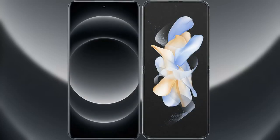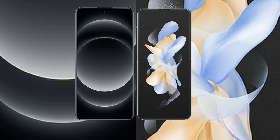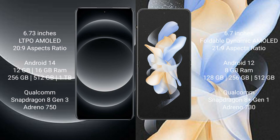I will compare the new Xiaomi 14 Ultra with the Samsung Galaxy Z Flip 4. The Xiaomi 14 Ultra comes with a 6.73-inch LTPO AMOLED display and Snapdragon 8 Gen 2, while the Samsung Galaxy Z Flip 4 comes with a 6.7-inch foldable Dynamic AMOLED display and Snapdragon 8 Gen 1.